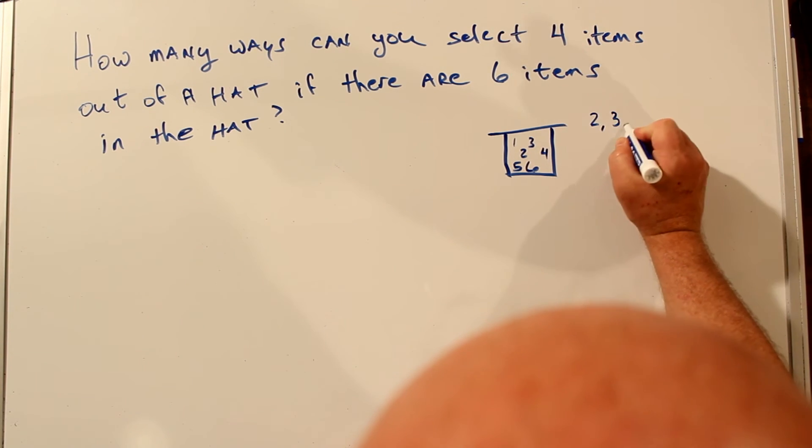Let's look at this problem. How many ways can you select four items out of a hat if there are six items in the hat? Combination or permutation. You have six random things and a hat. The way this question is worded, if you selected two, three, four, and five at once, it wouldn't matter if you selected four, two, three, five. That's the same thing. So in combinations, order doesn't matter.